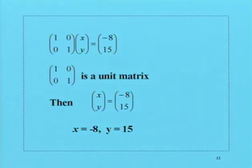So the solution to the pair of simultaneous equations gives us x equals -8, y equals 15.